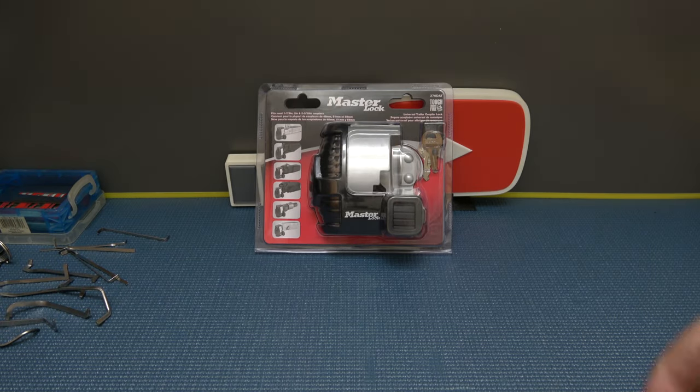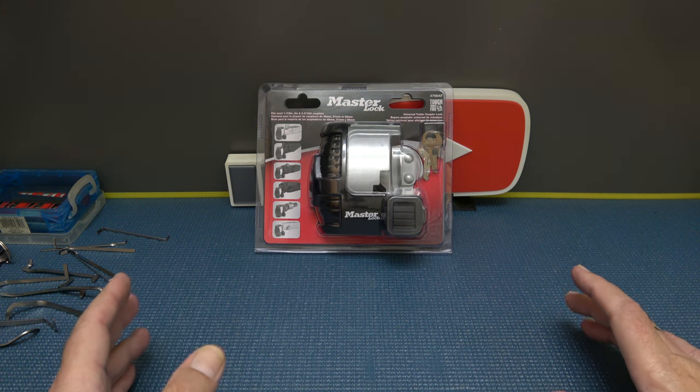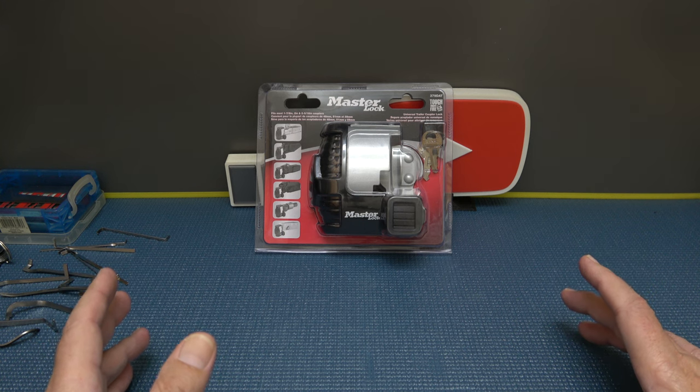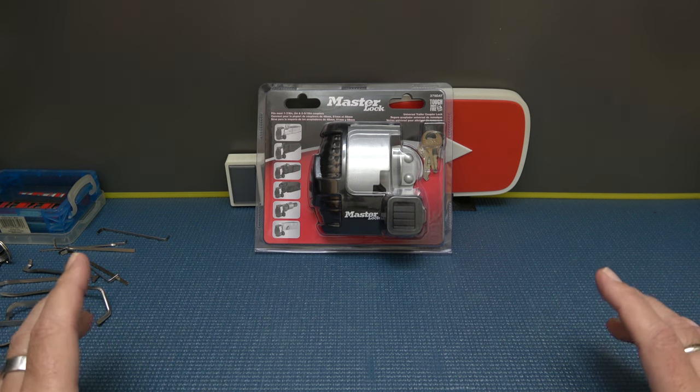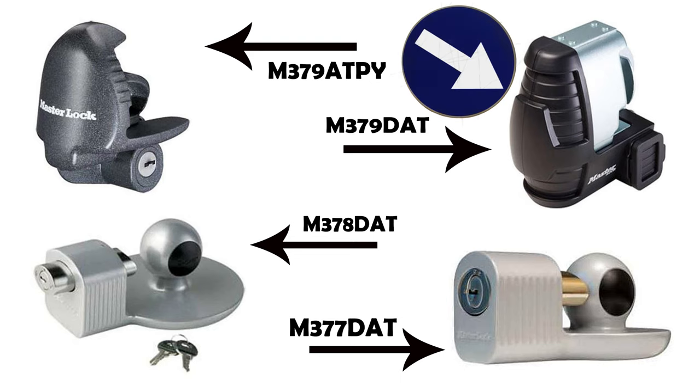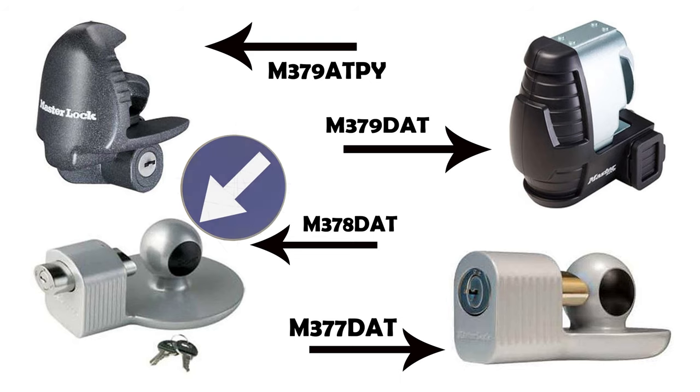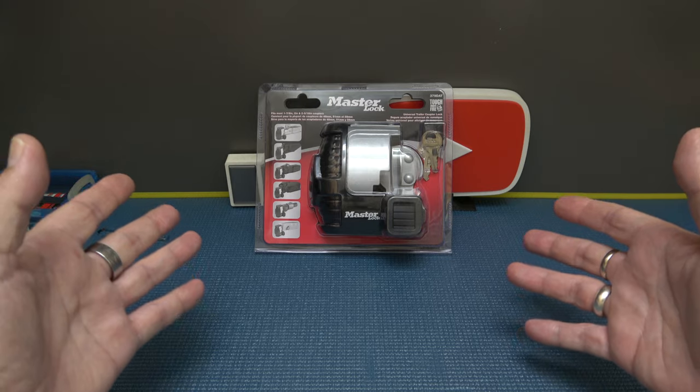All right y'all, welcome back. It's Albert Labelle and we are on number two of the quartet of trailer coupler locks. If you remember, we started it on video number 482 when we did the 379 ATPY. So I'm going to put up a picture of all four. On the top left, like I said, the one we did, the 379 ATPY. The top right is the 379 DAT, which is this one here. Then we'll get to bottom left, which is the 378 DAT, and then bottom right, the 377 DAT in later videos. So yeah, this is two of the quartet.